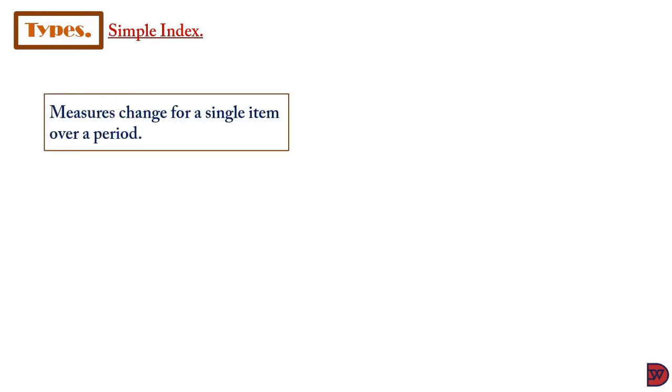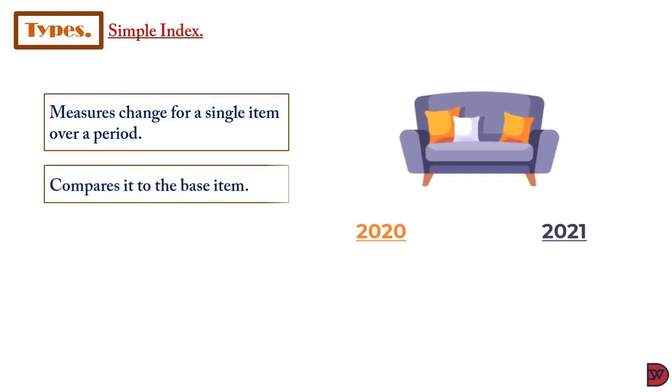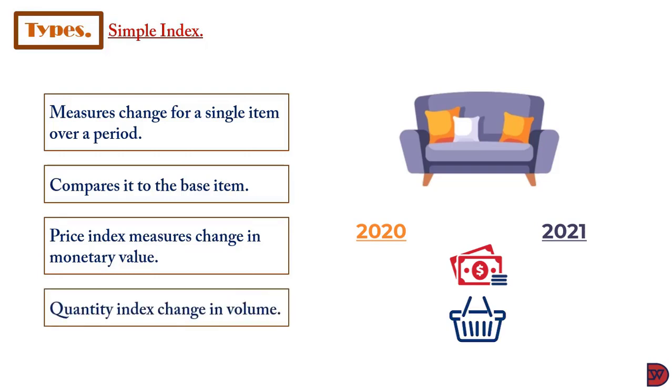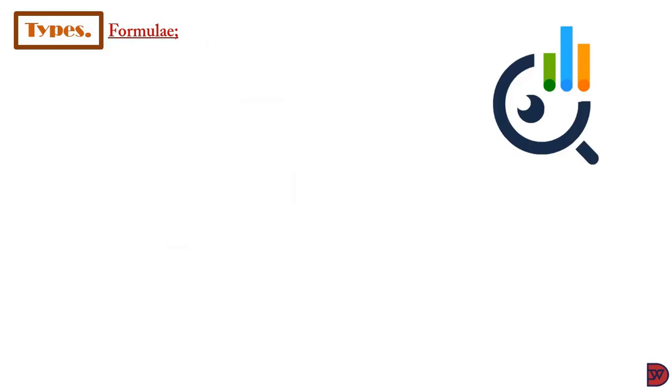Let's discuss the types of index numbers. The first is the simple index, where measurement of items—be it price or quantity—is done for a single product over a period of time. Price index measures the change in monetary value, whereas quantity index measures volume.